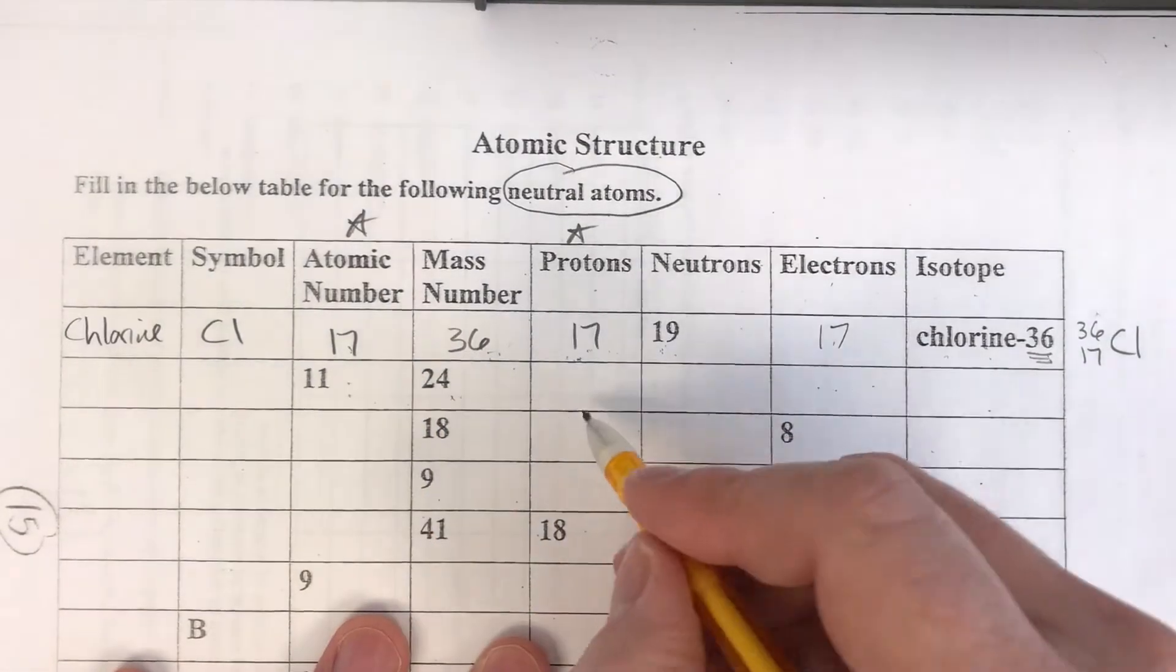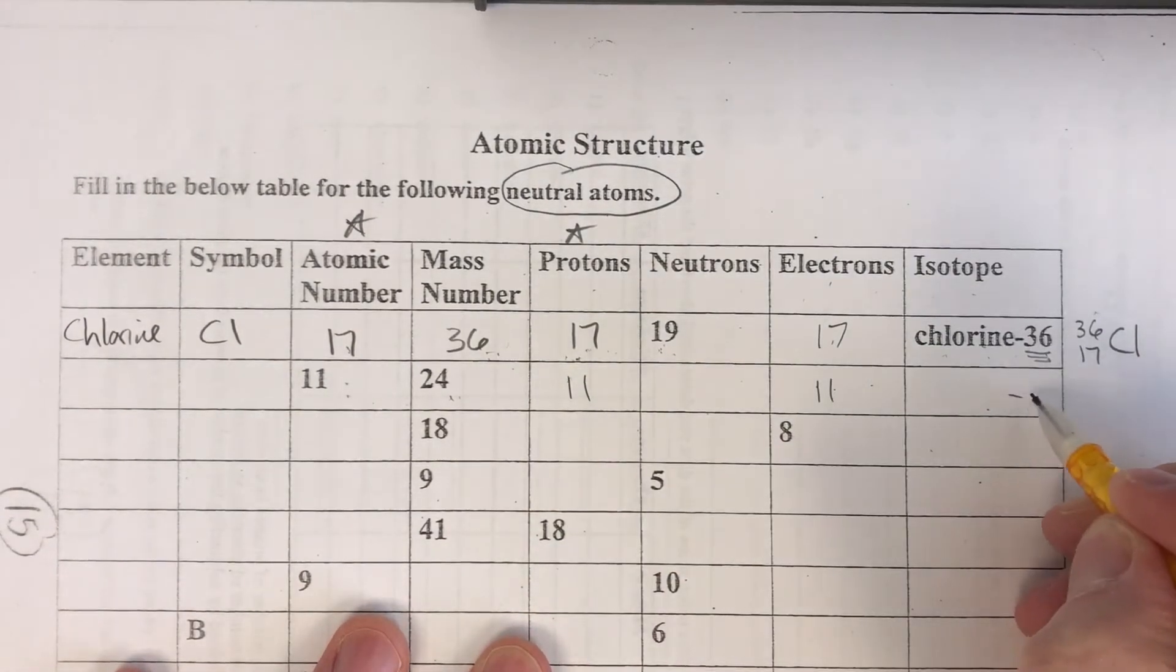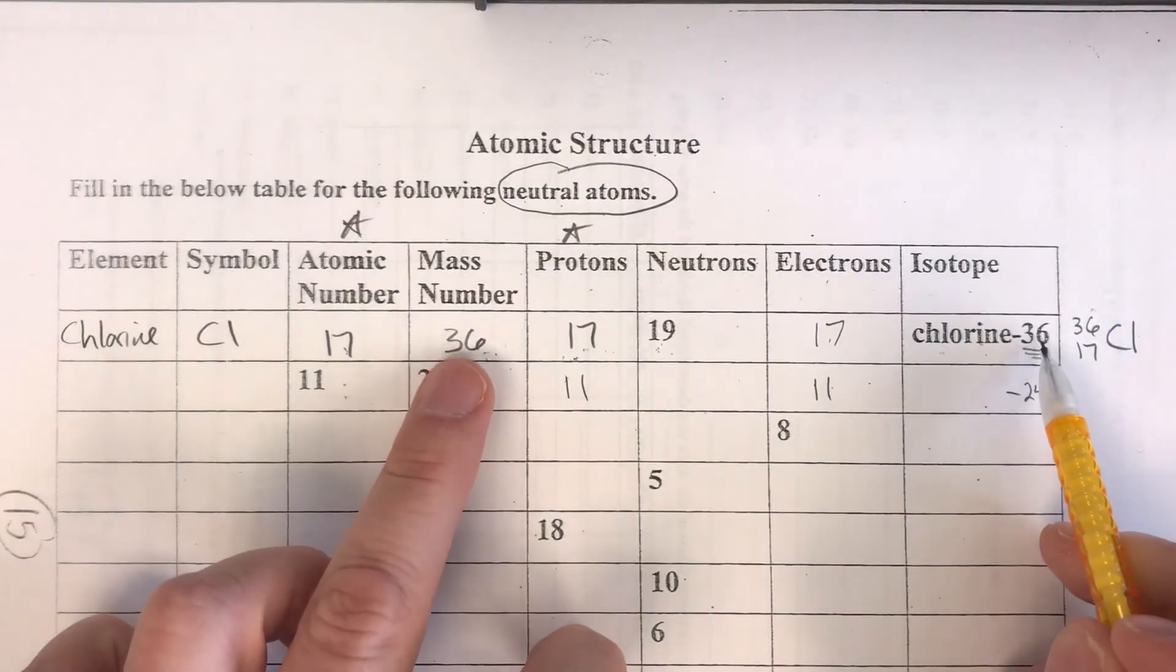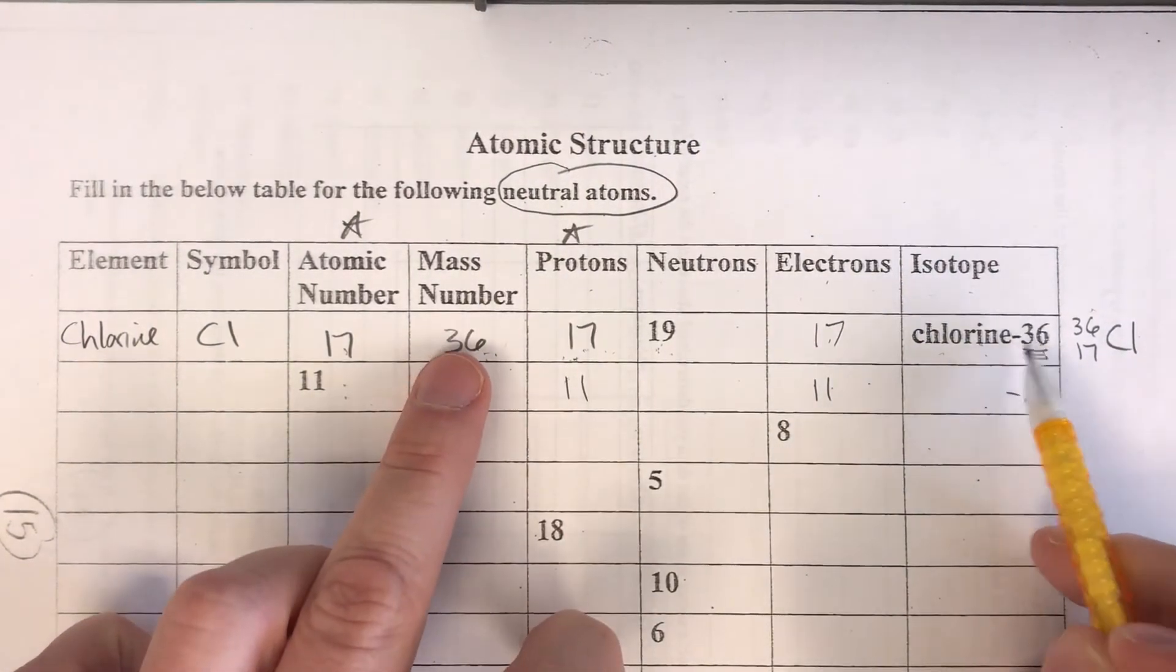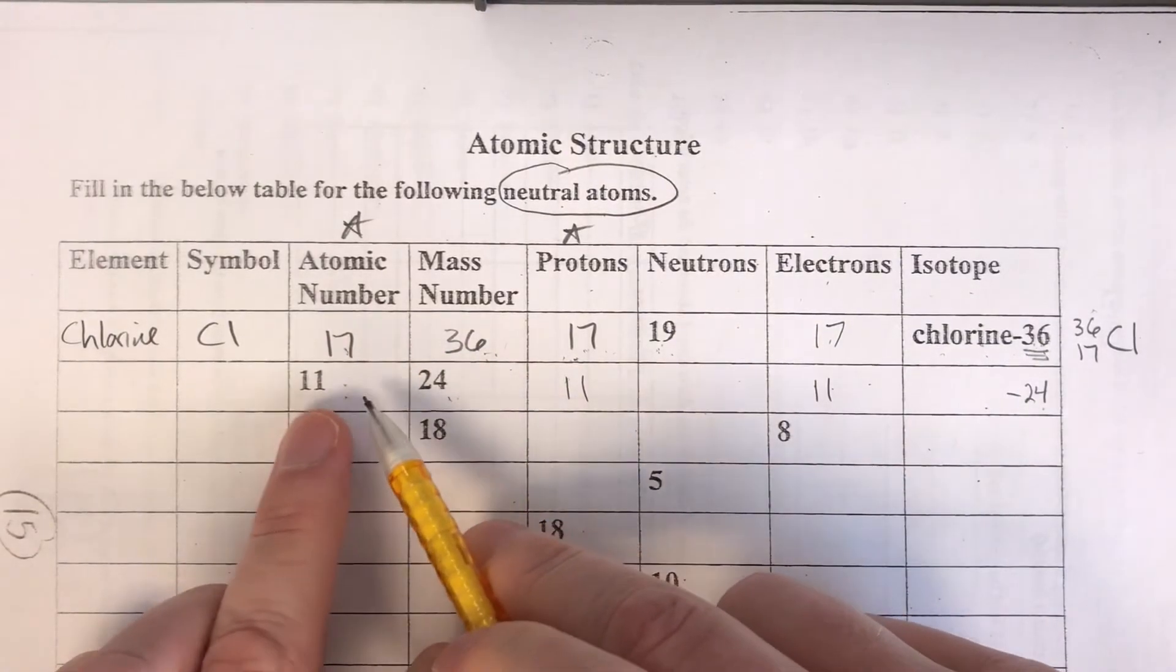Now if I know the atomic number is 11 I know my protons are 11, I know my electrons are 11, and I know whatever my element is here is going to end in 24 because those two numbers are going to be the same. The mass number is going to be the same. So chlorine-36 and then 24 with 24. But the question is what's number 11?